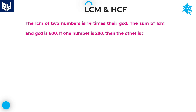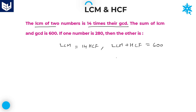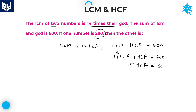Last question. The LCM of two numbers is 14 times their GCD. GCD and HCF are the same — greatest common divisor and highest common factor are both the same. LCM of two numbers is 14 times HCF, and sum of LCM and HCF equals 600. Substituting LCM = 14×HCF: 14×HCF + HCF = 600, so 15×HCF = 600, giving HCF = 40.